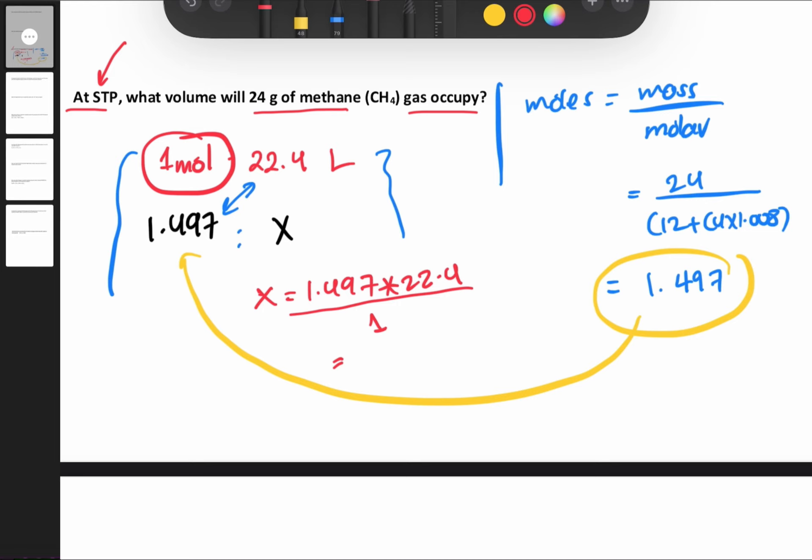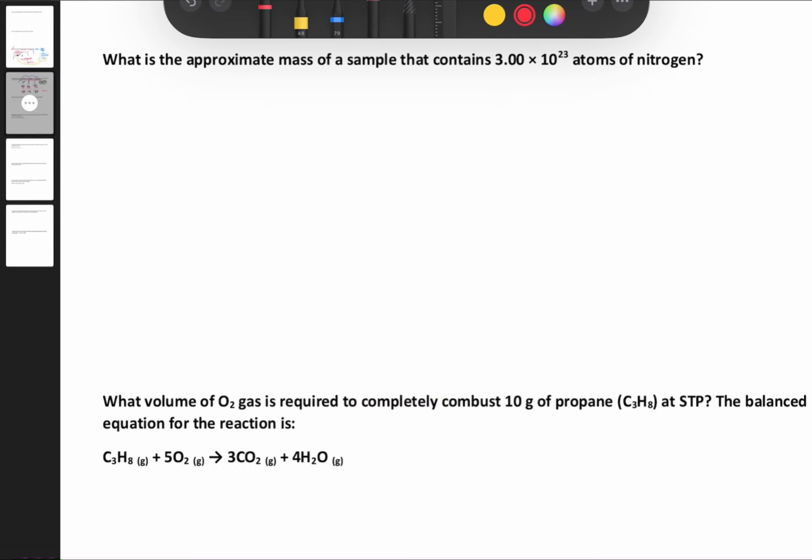What is the approximate mass of a sample that contains 3.00 × 10²³ atoms of nitrogen? The first step: since we're given the number of atoms, we change these atoms into moles. Remember the rule: each one mole of any matter contains 6.02 × 10²³ particles, atoms, or molecules.